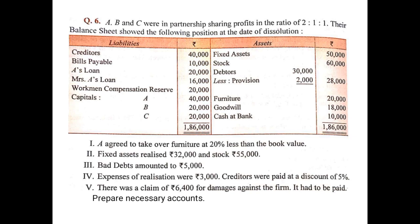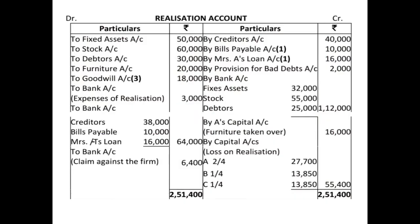Now let us look at the solution. You have to prepare the realization account, partner's loan account, partner's capital account, and the bank account. In the realization account, on the debit side, we have transferred the assets: fixed assets, stock, debtors at book value — very important — furniture and goodwill.